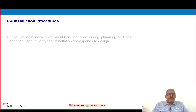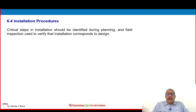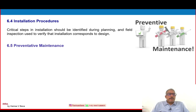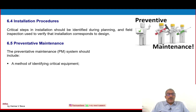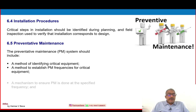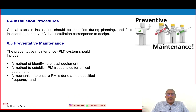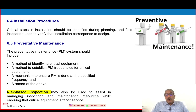6.4 — installation procedure: critical steps in installation should be identified during planning, and field inspection used to verify that installation corresponds to the design. 6.5 — preventive maintenance: the preventive maintenance program should include a method of identifying critical equipment, a method to establish preventive maintenance frequencies for critical equipment, a mechanism to ensure PM is done at the specified frequency, and a record of the above. Risk-based inspection may also be used to assist in managing inspection and maintenance resources while ensuring that critical equipment is fit for service.